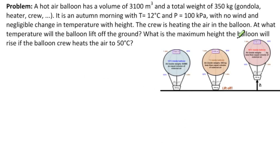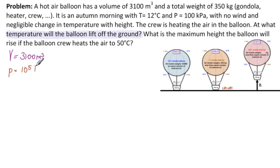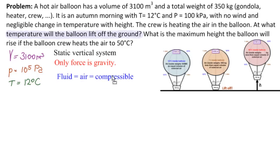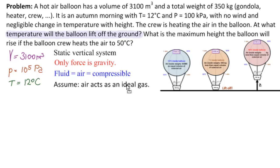The first part of this problem is: at what temperature will the balloon lift off? As always, we start by writing down what we have. In all states: volume of 3,100 meters cubed, outside pressure of 1 atmosphere (10^5 pascals), and outside temperature of 12 degrees centigrade. Plus the weight of the balloon. We have a static vertical system. Each of these are stages. Our only force is gravity. Our fluid is air, which is compressible, so we have to think about density. And we're going to assume our air acts as an ideal gas.